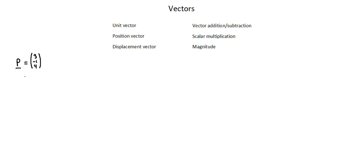In referencing unit vector, let's look at another notation we can use for vector P. We can write vector P as 3i minus j, and we've seen i and j as unit vectors for vectors in two-dimensional space. Now in three-dimensional space, we'll have plus 4k, referencing the Z-component. In this example, our unit vectors are i, j, and k. A unit vector is a length of one. Vector P has a description of three units positive on the X-axis, one unit negative on the Y-axis, and four units positive on the Z-axis — those units are referenced by i for the X-axis, j for the Y-axis, and k for the Z-axis. So we've discussed unit vector, position vector, and displacement vector.